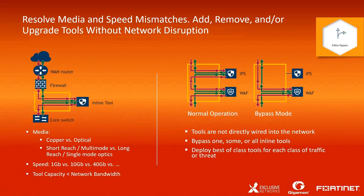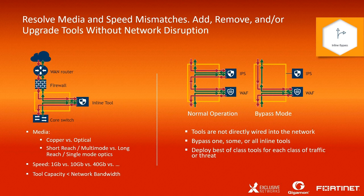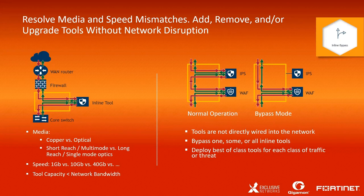Let's talk about media and speed mismatches, and adding, removing, and upgrading tools without disruption. Gigamon can take traffic at the speed of the traffic and feed the tool at the speed of the tool — meaning your tool cannot become a bottleneck for the rest of the network. That increases the longevity of existing tools and makes it very easy to just bypass tools or take them out of operation for maintenance or upgrades. This gives the organization a lot more flexibility, so you don't have to do maintenance at 3 o'clock in the morning on Sunday.